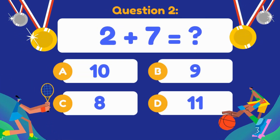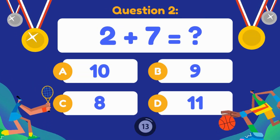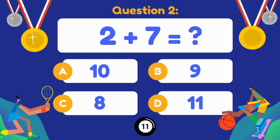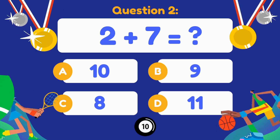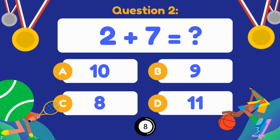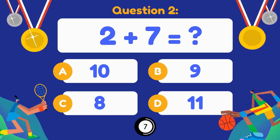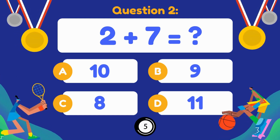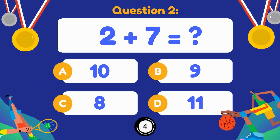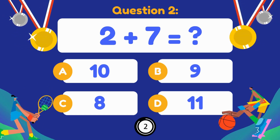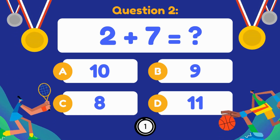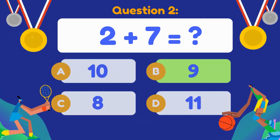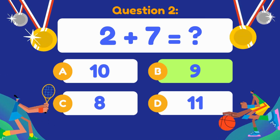2 plus 7 equals. 2 plus 7 is equal to 9.